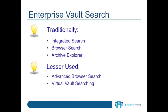For many releases of Enterprise Vault, the capabilities of searching for archived items has not really been updated. Since around Enterprise Vault 8, the methods of searching have largely been the same. These methods are Integrated Search, Browser Search, Archive Explorer, and then perhaps a little bit lesser used is Advanced Browser Search, and finally Virtual Vault Searching.